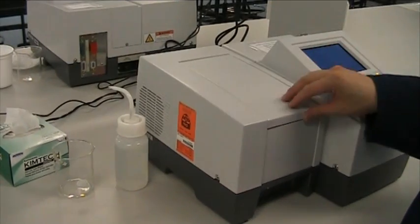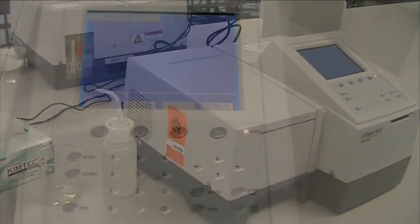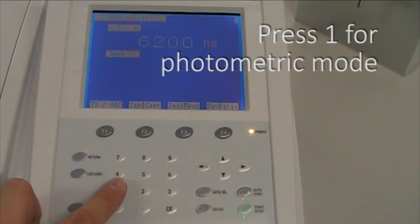Close the lid. From the main menu, press 1 to enter photometric mode.